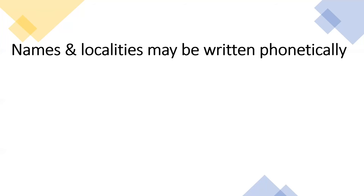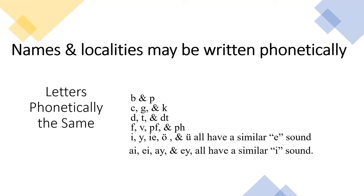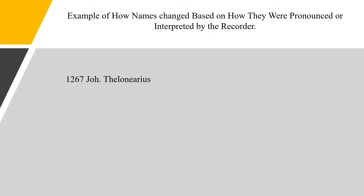Names and localities may be written phonetically. In Germany, record keepers such as ministers, civil registrars, census takers, etc., often recorded names of people and places phonetically. The problem comes from the fact that some letters and combinations of letters are phonetically the same. When a recorder asked a person to pronounce his name, he would record it the way it sounded to him. The following is an example of how names of an individual changed based on how they were pronounced or interpreted by the recorder.